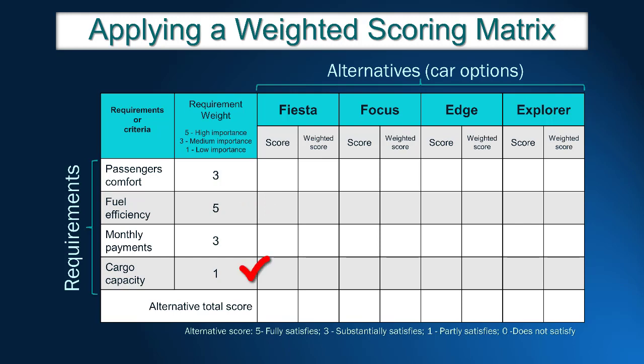Let's make some assumptions for John. He uses his car every day to work, so the vehicle must be fuel efficient. Therefore, the requirement 'full efficiency' receives weight 5. John considers that cargo capacity is not that important and gave it weight 1. The remaining requirements receive intermediate weights ranging from 2 to 4. In this example, passengers' comfort and monthly payments are graded as 3, meaning they have intermediate importance in the final decision.